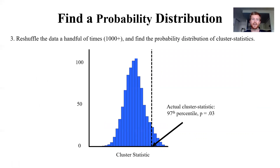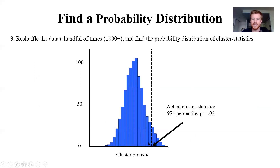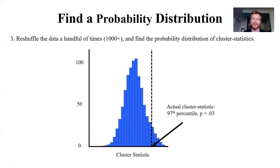We do that random shuffling process a thousand or ten thousand times and look at the distribution of all those cluster sizes. Maybe clusters of size 30 were quite common, whereas clusters of size 40 were quite rare. We then pick a percentile as our significance threshold, and if the cluster we found in our real data was larger than that threshold, it's significant — and vice versa. Once we have that null distribution, we can determine the likelihood that our cluster occurred for real versus by chance.